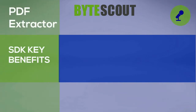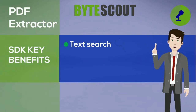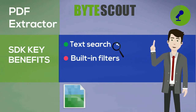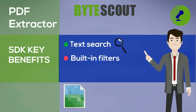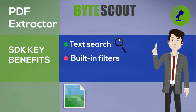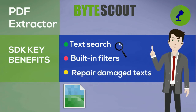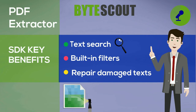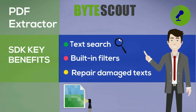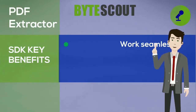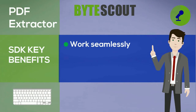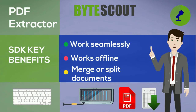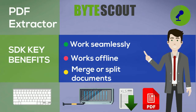PDF Extractor SDK key benefits. Advanced text search with regular expressions. Built-in filters to deal with noisy images, e.g. badly scanned documents. Repair damaged texts even if it's not visible — when a PDF shows correct text but copies the damaged one. Work seamlessly with all character encodings. Works offline without internet connection required. Merge or split documents for easier management.